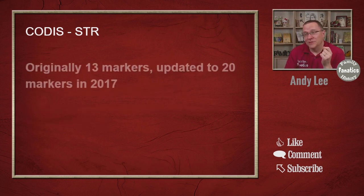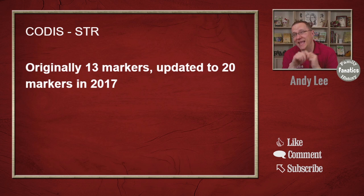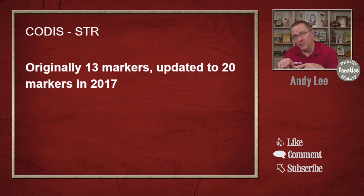When this database was developed, there were originally 13 markers. And in 2017, they updated that to 20 markers.